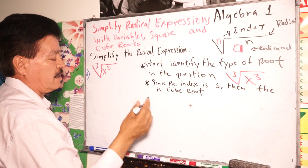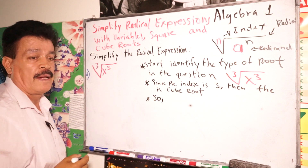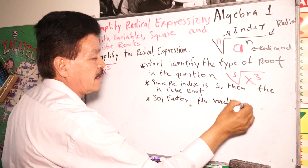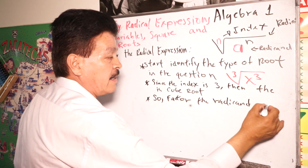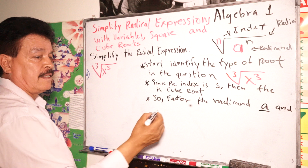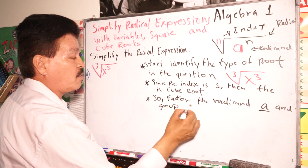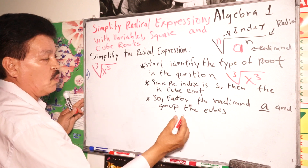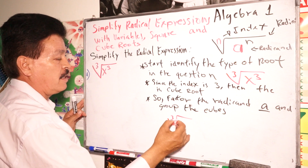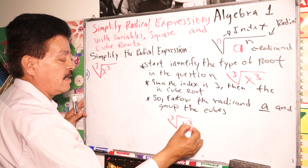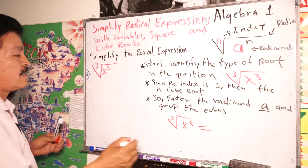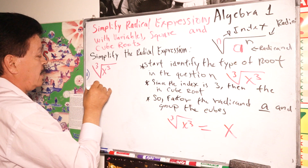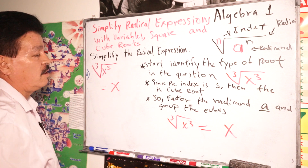Third step: factor the radical and group the cubes. We write the cube root of x to the third power. So the answer here is x. This equals x. That is our answer for this first problem.